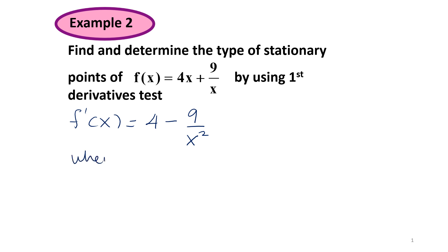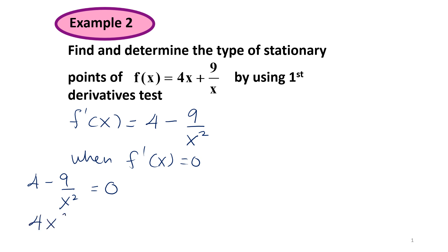When f'(x) is equal to 0, so 4 minus 9 over x squared is equal to 0. Equalizing the denominator, we have 4x squared minus 9 over x squared is equal to 0.